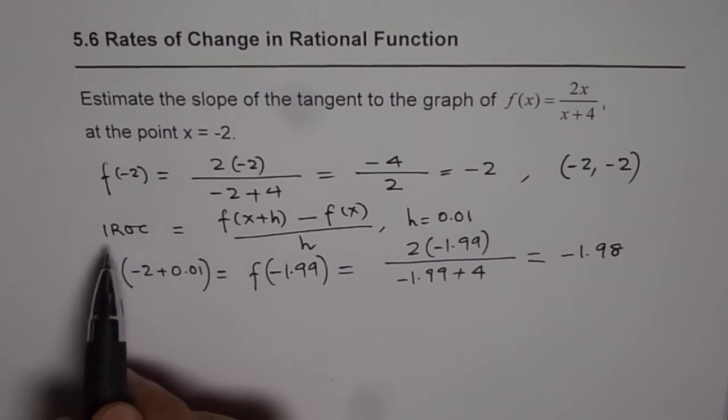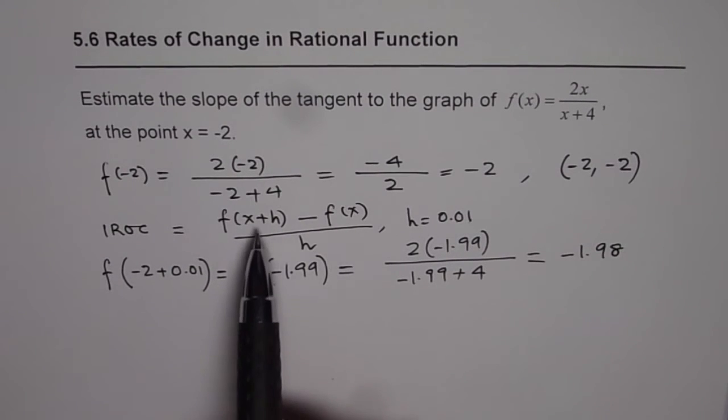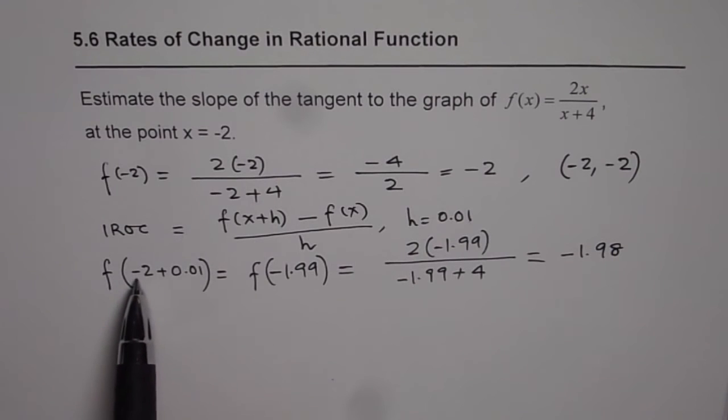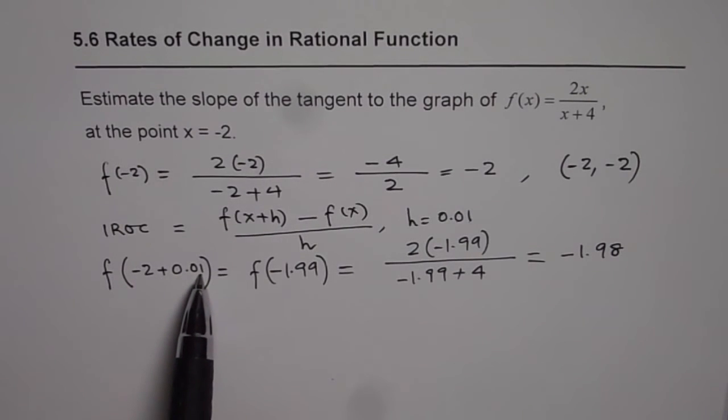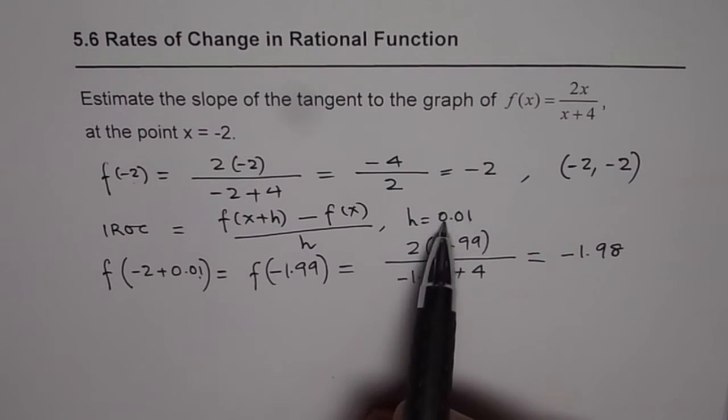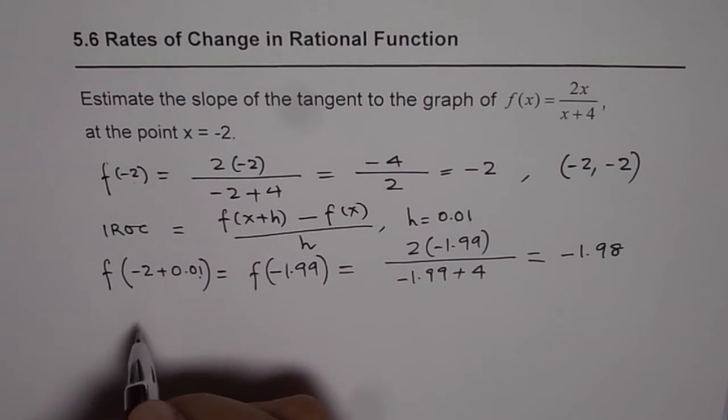Now, instantaneous rate of change is the difference of these two values. f(-2 + 0.01) minus f(-2), divided by h, which is 0.01. So let me write again.